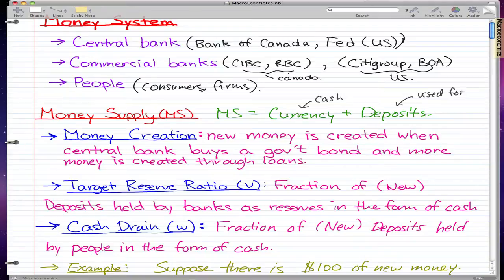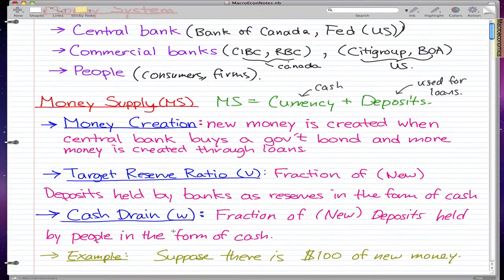And I'll probably talk about them much later, but for now I will focus on these three definitions that I really want you guys to focus on. The first definition is—yeah, I just won't put them all down to cut the time short. The first definition is money creation. It's when new money is created when the central bank buys a government bond, and more money is created through loans.